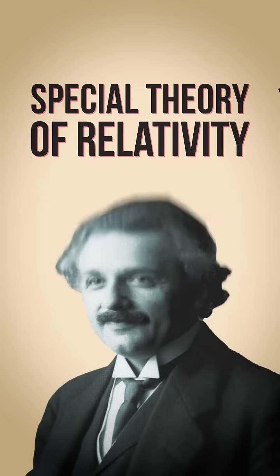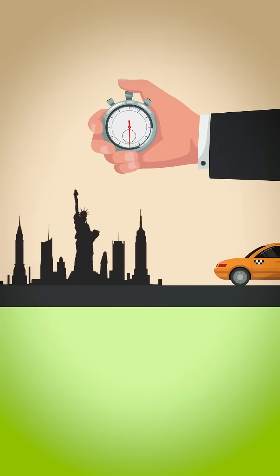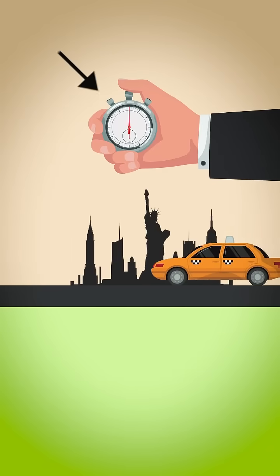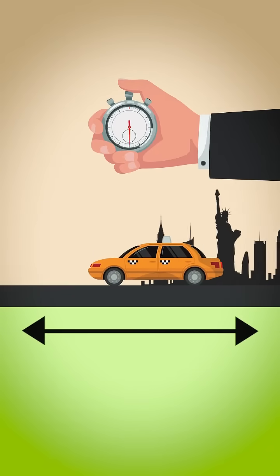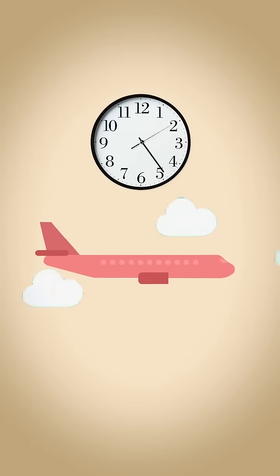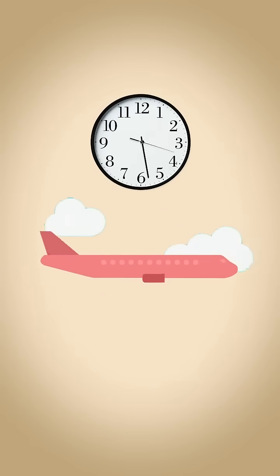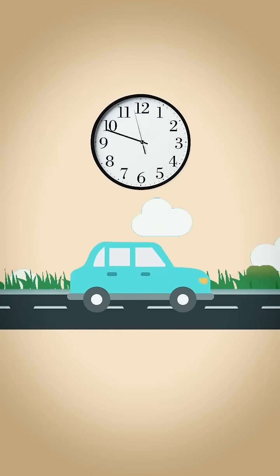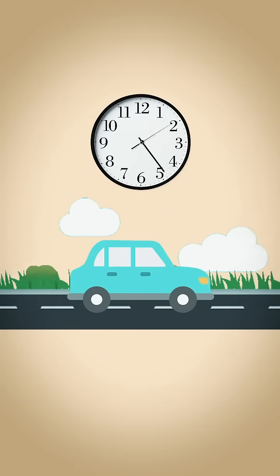The special theory of relativity is all about how we measure time and distance. Let's start with time. We all know that time always keeps moving forward normally. Einstein discovered that time can actually go slower or faster depending on your speed.